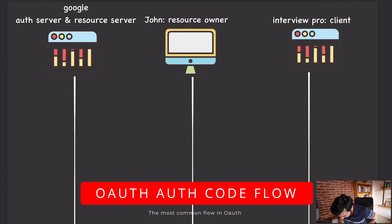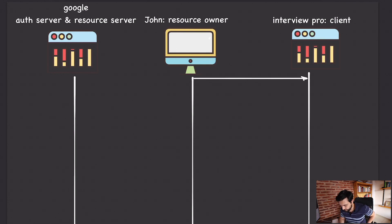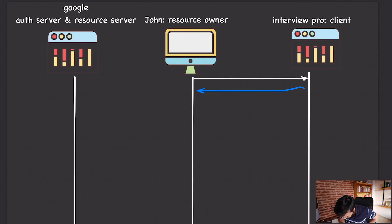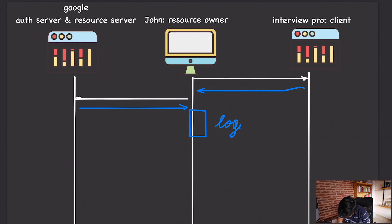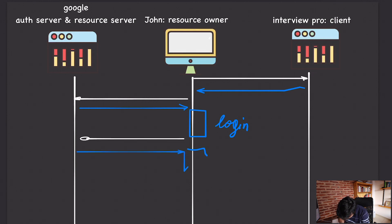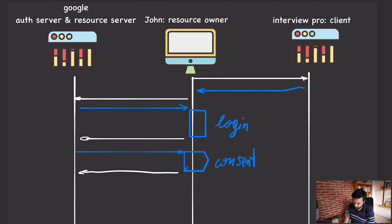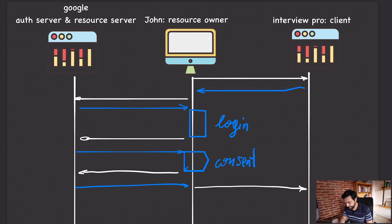The browser on John's machine comes to Interview Pro and says, 'I want to connect my Google account to you.' I'll mark responses in blue. Interview Pro says, 'Go to this URL,' and redirects John's browser to Google. Google responds with a login screen. Once he logs in and submits, Google shows him a consent screen. Once he consents and submits, Google says, 'Go back to Interview Pro.' At this stage, Interview Pro has access to John's account — that's the flow in a nutshell.